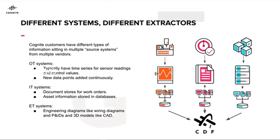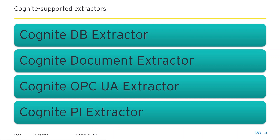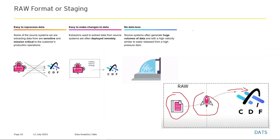We have different source systems and extractors — the major ones are OT, IT, and ET systems. Cognite supports multiple extractors including the Cognite DB extractor, Cognite document extractor, Cognite OPC UA extractor, and Cognite PI extractor. The raw format or staging area exists for important reasons: it makes it easy to reprocess data, since some source systems are sensitive and mission-critical to production operations, and it ensures no data loss.